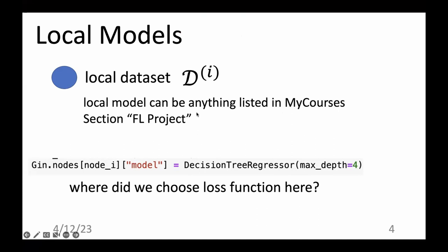Unfortunately we must restrict your freedom a bit, because we need to ensure a meaningful peer review. If you use very sophisticated local models, it might be hard to assess their application in the report. So we stick to the simple models provided by scikit-learn. You can use different models for different nodes — a decision tree for one node and a linear regression model for another — giving you a lot of flexibility.